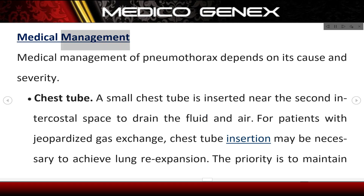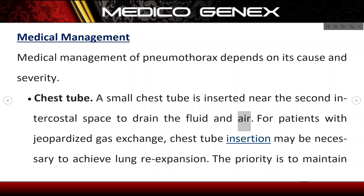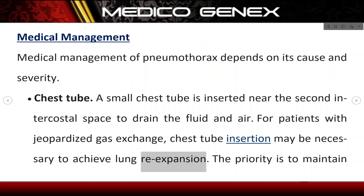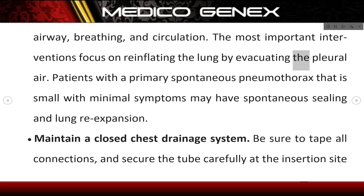Medical management. Medical management of pneumothorax depends on its cause and severity. Chest tube — a small chest tube is inserted near the second intercostal space to drain the fluid and air. For patients with jeopardized gas exchange, chest tube insertion may be necessary to achieve lung re-expansion. The priority is to maintain airway, breathing, and circulation. The most important interventions focus on re-inflating the lung by evacuating the pleural air.